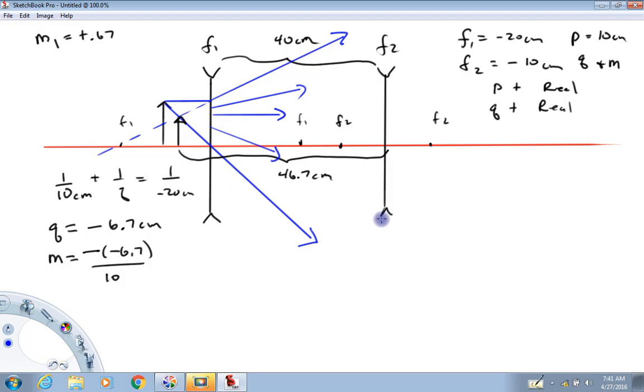As far as this lens is concerned, this is a real object. Because these light rays do actually backtrack to this point. Basically, as far as this lens is concerned, it is equivalent to putting an object right here and getting rid of this lens. Therefore, the object distance for lens two is positive 46.7 centimeters.